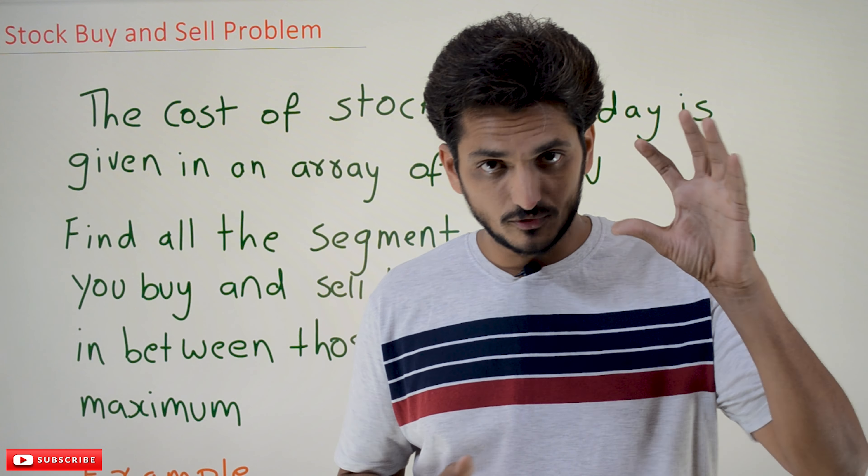They are going to give you the cost of stock on each day — the stock price for every day. We need to buy and sell the stock so that the profit is maximum. We need to find all the segments. Let's understand it better with an example. Here n equals 7, meaning 7 days of stock cost are provided.